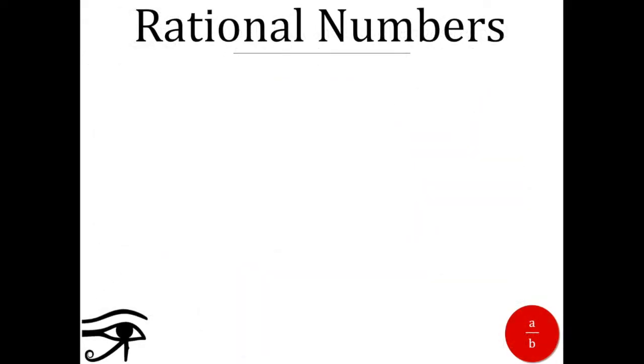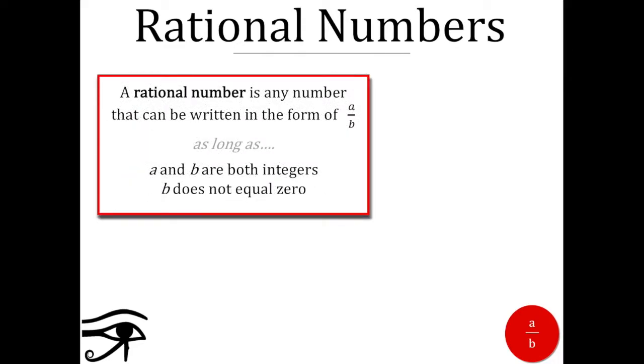We'll begin by reviewing a few definitions. First of all, what's a rational number? A rational number is any number that can be written in the form of a over b, as long as a and b are both integers and b does not equal zero.